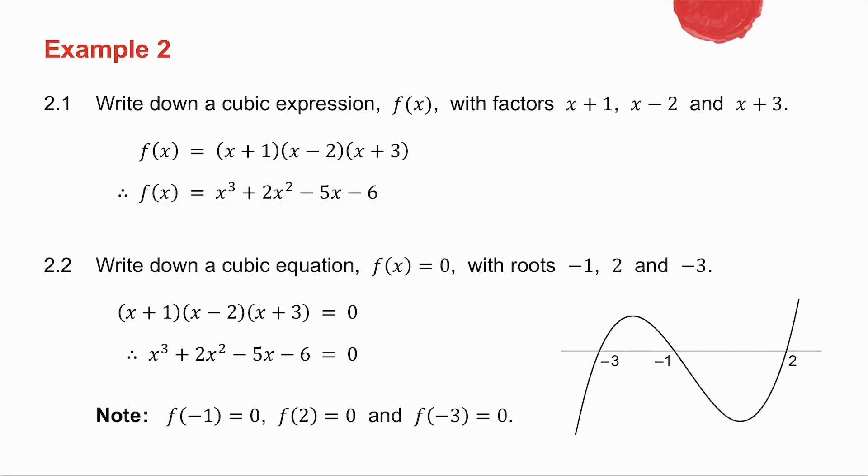When I ask you to write down a cubic equation with roots minus 1, 2, and minus 3, remember a root of minus 1 comes from a factor of x plus 1, a root of 2 comes from a factor of x minus 2, and a root of minus 3 comes from a factor of x plus 3. Then I multiply it together and there I get my cubic equation.